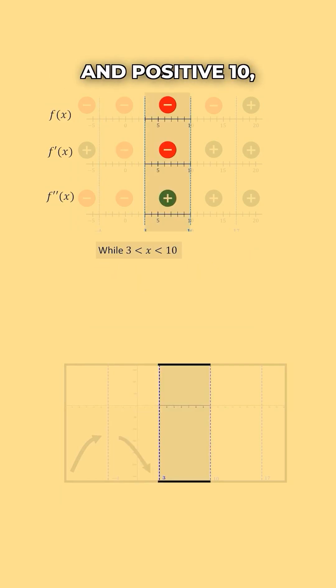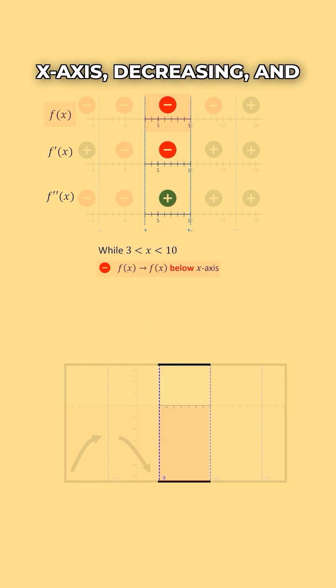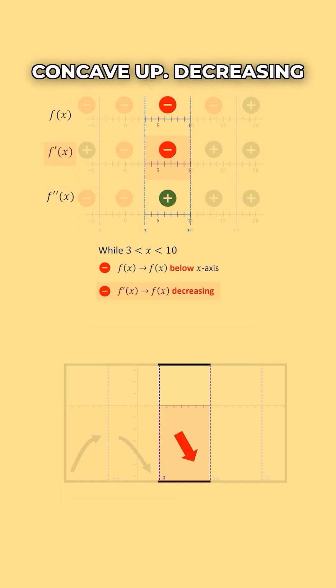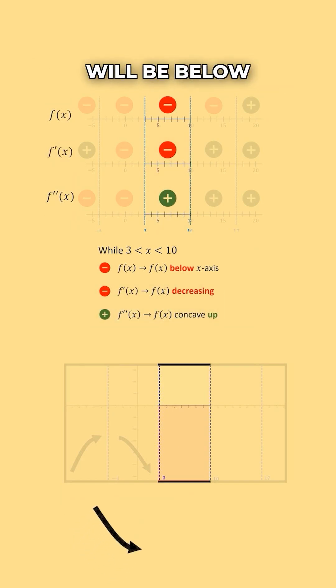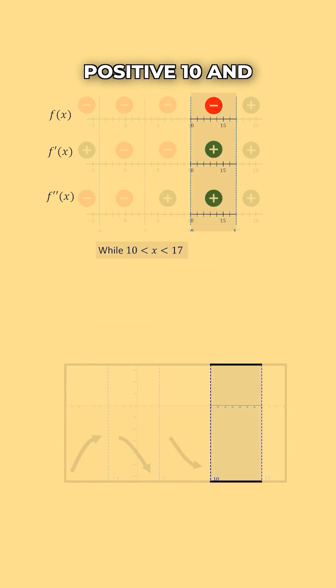When x is between positive 3 and positive 10, our function will be below the x-axis, decreasing, and concave up. Decreasing and concave up tells us our function will look like this, and will be below the x-axis.